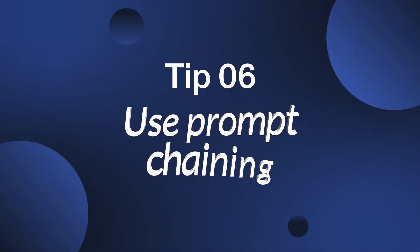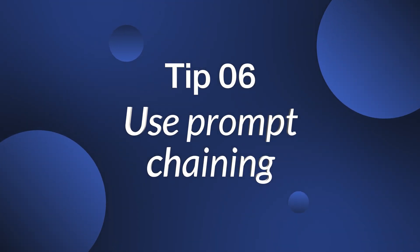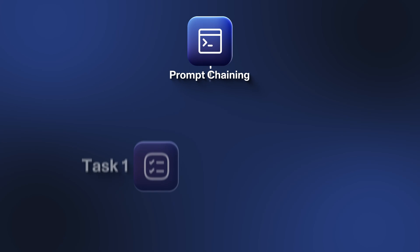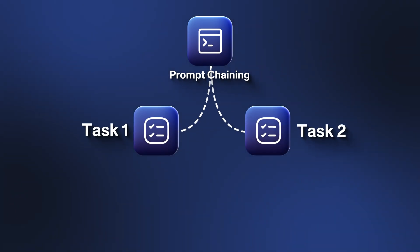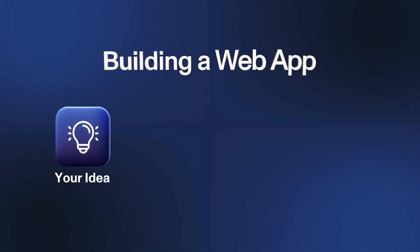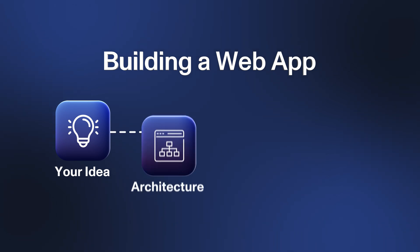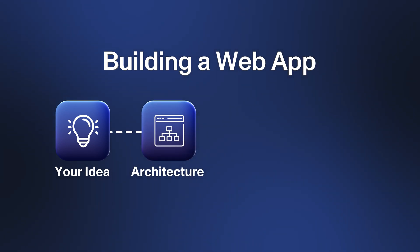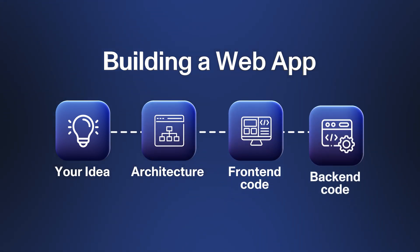Tip number six is to use prompt chaining instead of trying to get the final product all at once. Prompt chaining is dividing your task into subtasks and asking the LLM to complete them one by one. For example, if you want to build a web app, you can first explain your idea to the LLM, ask it to create an architecture, then ask for the front-end code, and then the back-end code. This way you can follow what happens at each step and catch any errors before they corrupt the whole project.